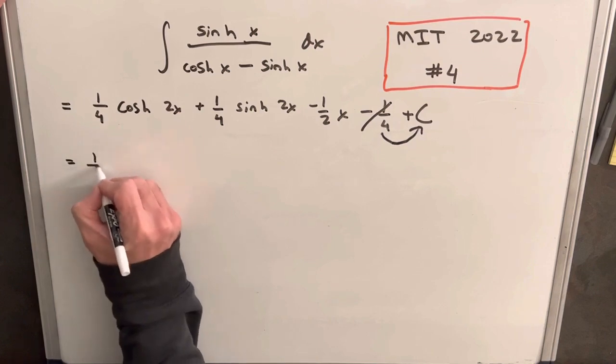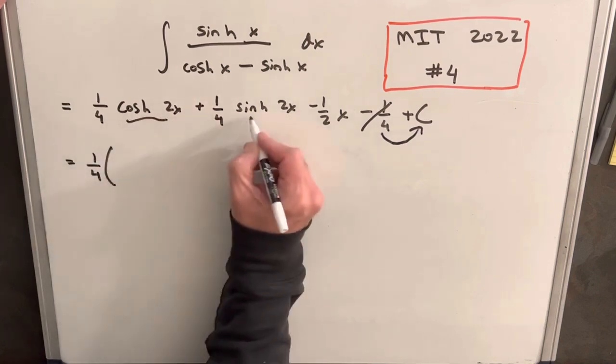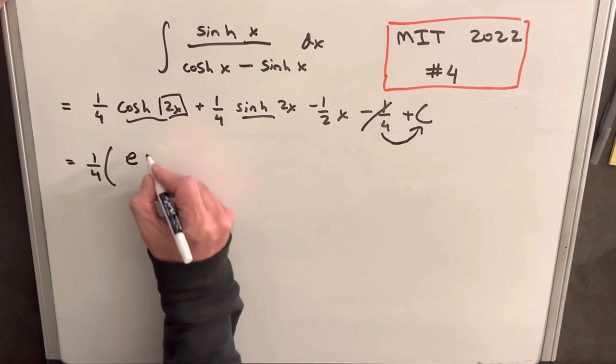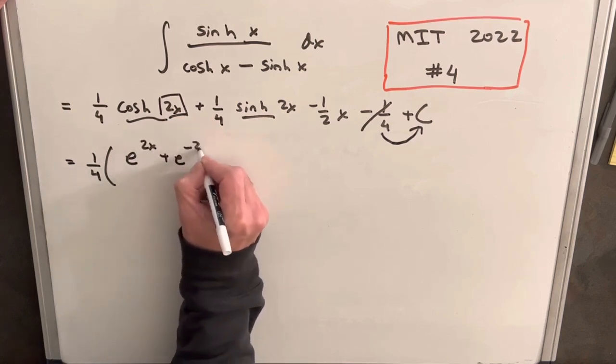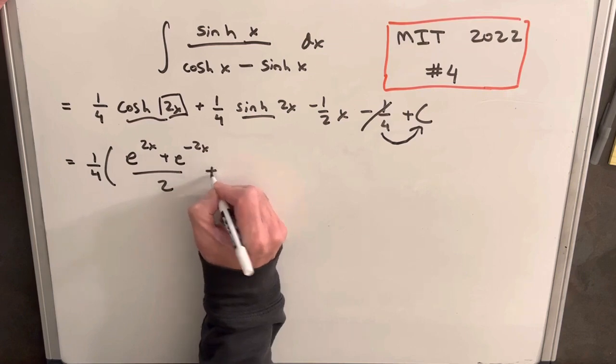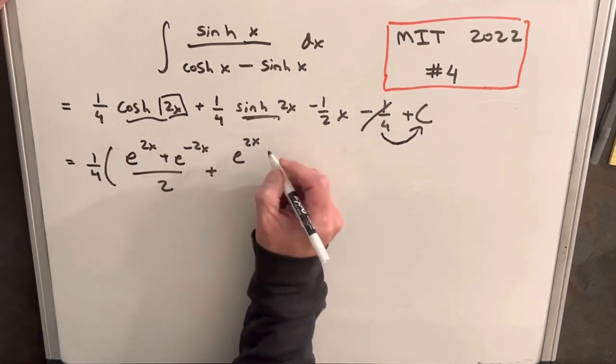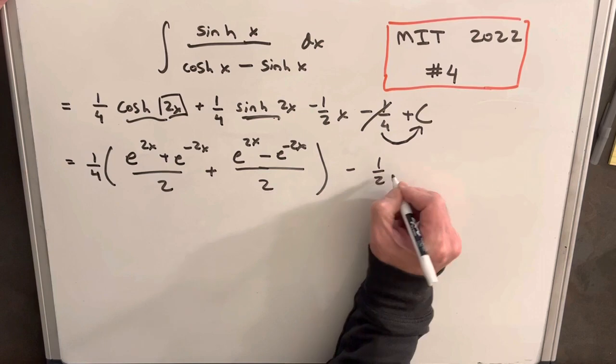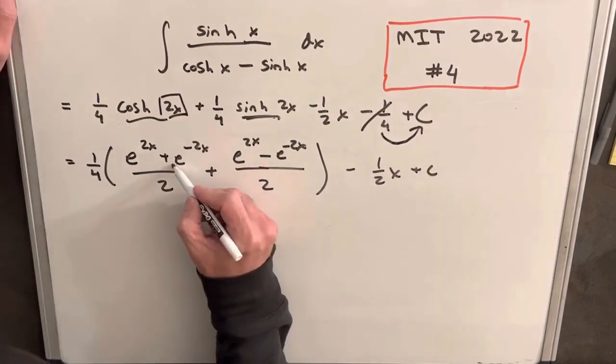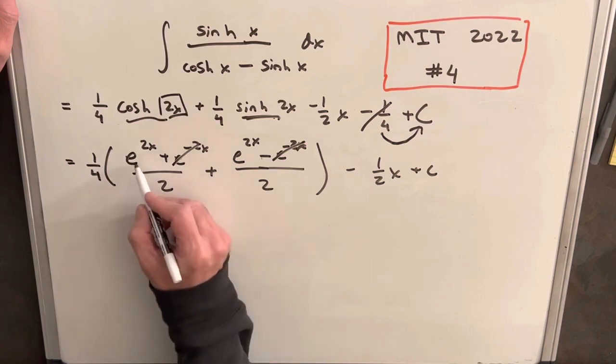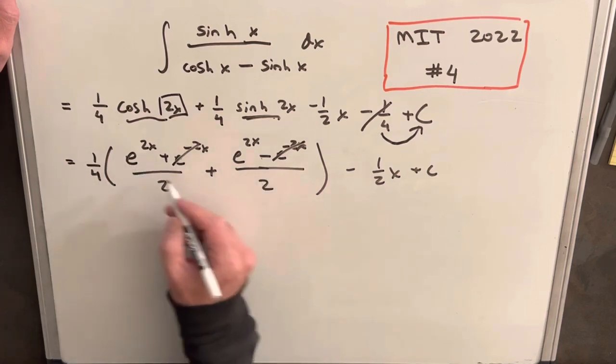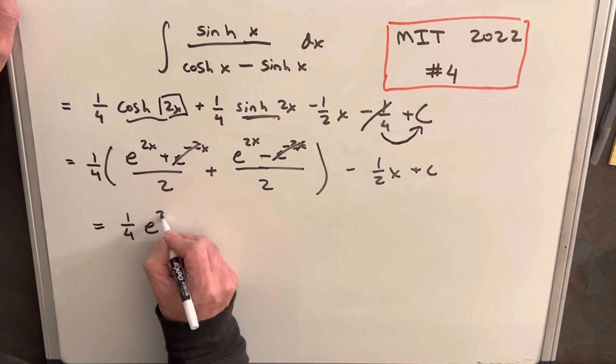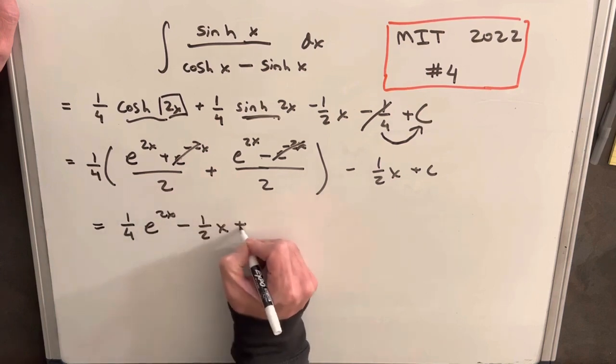But then here with these terms, we can factor out a 1 fourth. So I'm just going to use the definition of these again. So for cosh 2x, so instead of having e to the x, we're just going to plug in, we have a different input 2x. So we're going to have e to the 2x plus e to the minus 2x over 2 plus our sinh value. And you'll see that this is going to clean up pretty nice because we got that minus sign there, over 2 minus 1 half x plus c. Then our e to the minus 2x, they're going to cancel with the minus sign. We're going to have a half e to the 2x plus a half e to the 2x. That's just 1 e to the 2x. So essentially, we're just going to have 1 fourth e to the 2x here, minus 1 half x plus c.